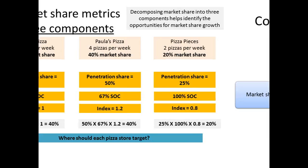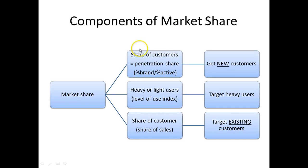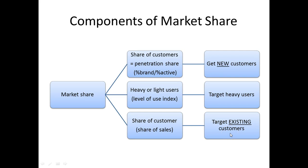So what should each store do? If we have a low penetration share — our share of numbers of customers — then our goal is to get new customers. If we have a low index of usage, we should try to target heavy users. And if our weakness is share of customer, we should be looking to target existing customers. That's how the three components work together.